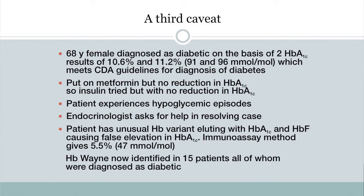So we've seen one too low and one too high. Here's a third caveat: a 68-year-old female diagnosed as diabetic on the basis of two successive elevated hemoglobin A1c results, meeting the Canadian Diabetes Association guidelines. She was put on metformin with no reduction in A1c. The physician then initiated insulin therapy, and the patient experienced severe hypoglycemic episodes. The endocrinologist asked for help in resolving the case.